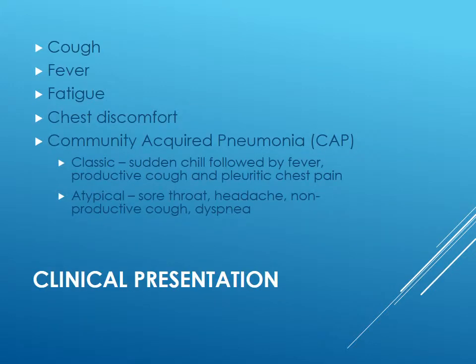The clinical presentation can vary depending on age and type of pneumonia. Most of the time patients will have cough, fever, fatigue, and chest discomfort. In classic community-acquired pneumonia, they usually have sudden chills followed by fever, a productive cough, and pleuritic chest pain. If it's atypical, they may have a sore throat, headache, nonproductive cough, and dyspnea — so there can be a difference in presentation.